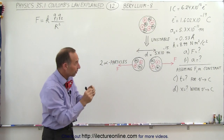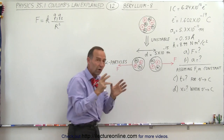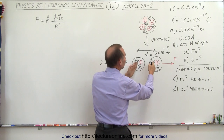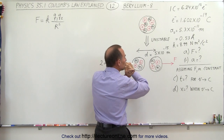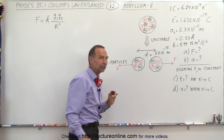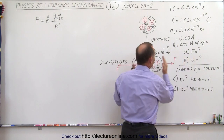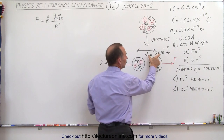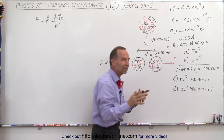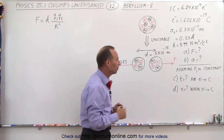Once the two particles are split up and there's any sort of distance between them, the strong force can no longer hold them together, and the repulsive forces between the two alpha particles will be enormous and will shoot the two particles apart from one another. What we're going to do here is first calculate the force between them when they start at their initial distance of 5 times 10 to the minus 15 meters, which is a little bit bigger than the typical nucleus of an atom.